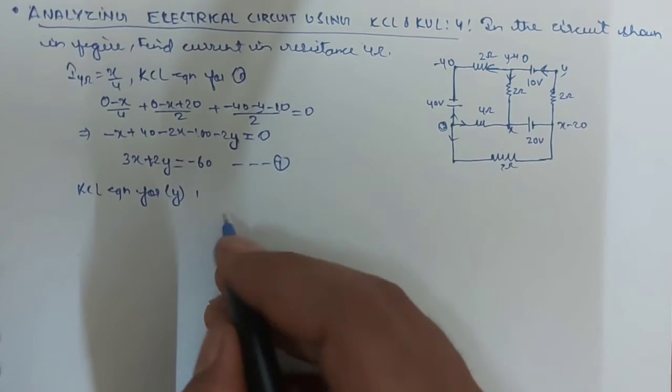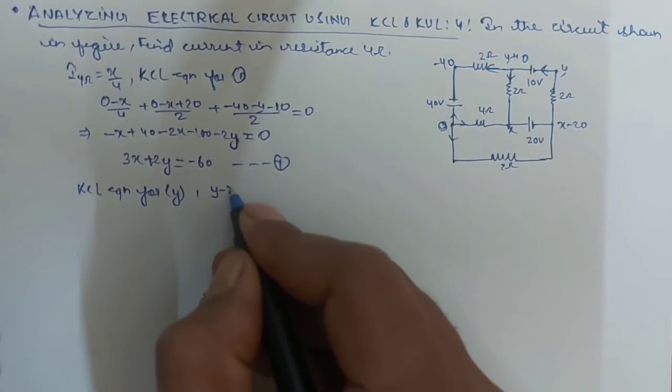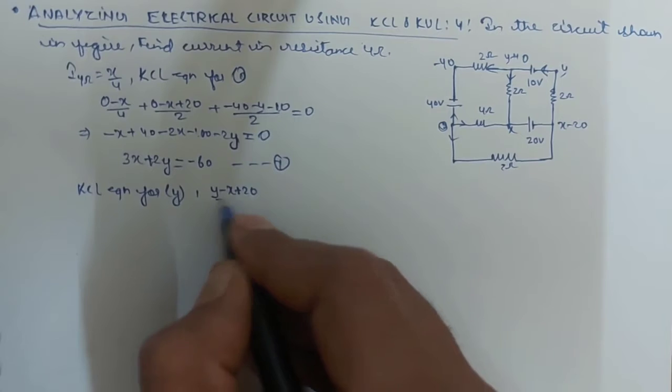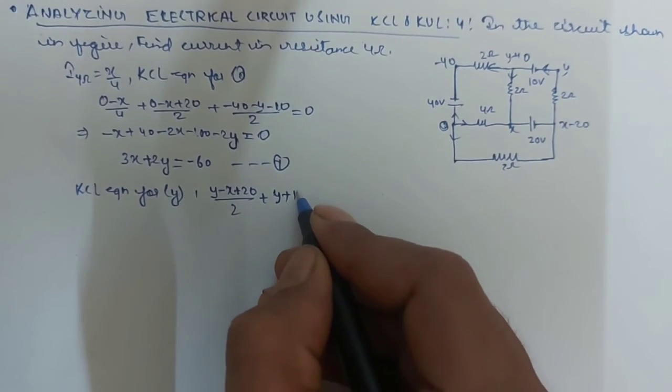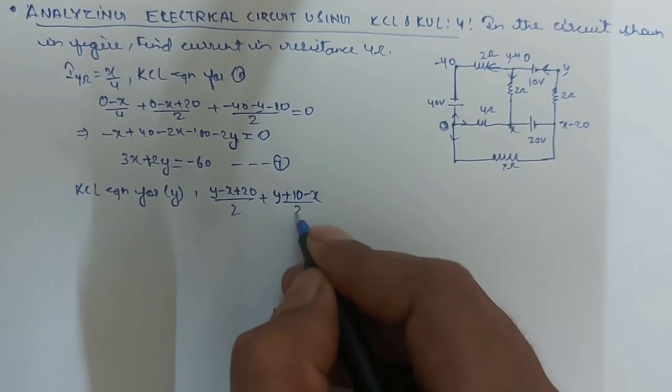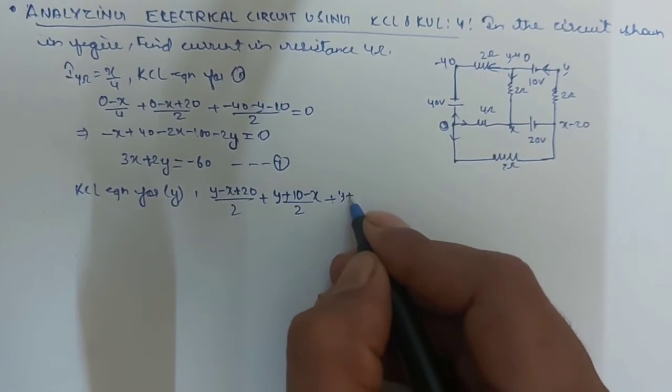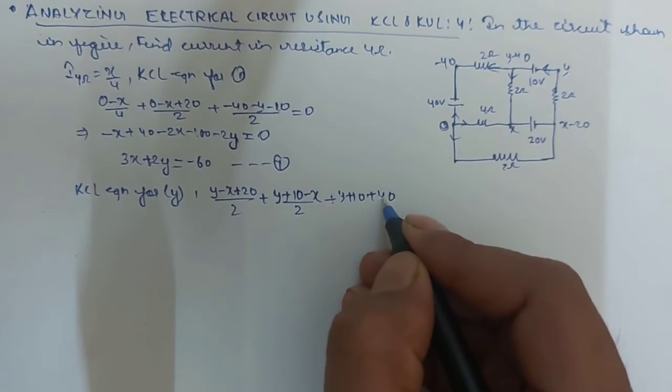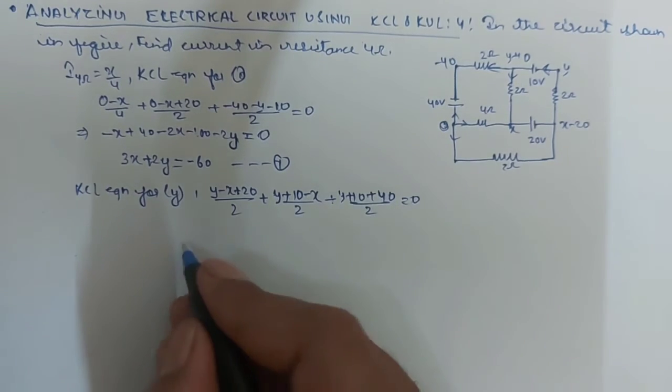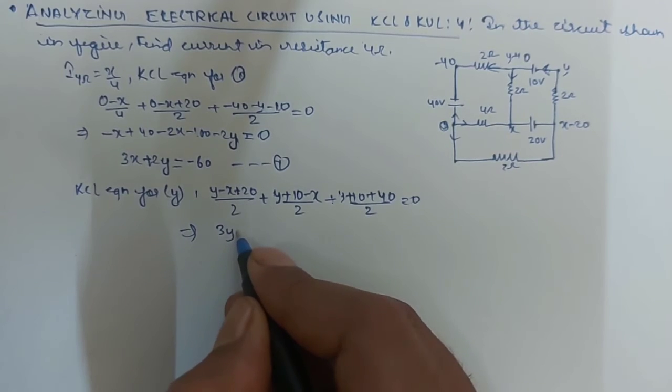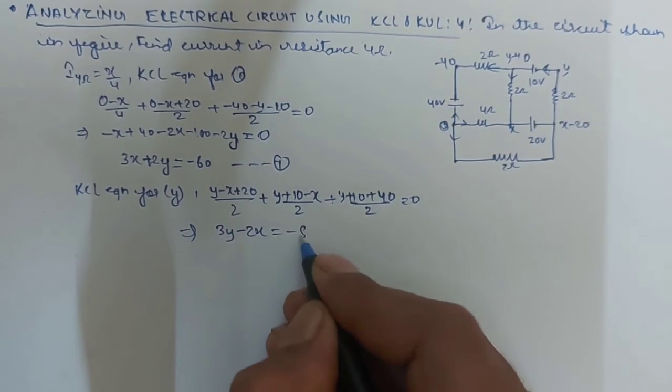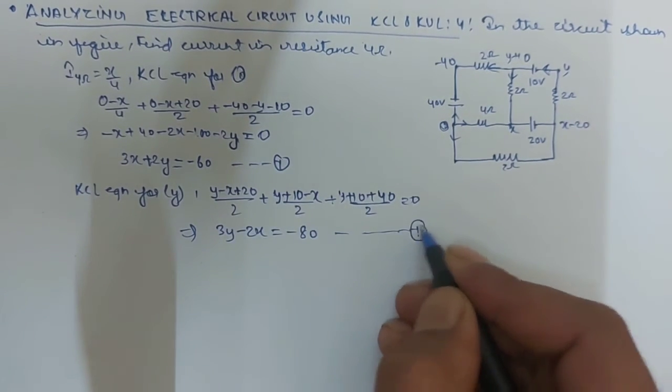So, you can write y minus x plus 20 upon 2 plus y plus 10 minus x upon 2 plus y plus 10 plus 40 upon 2 is equal to 0. So, let's solve this. You will get around 3y minus 2x is equal to minus 80. Taking it as equation 2.